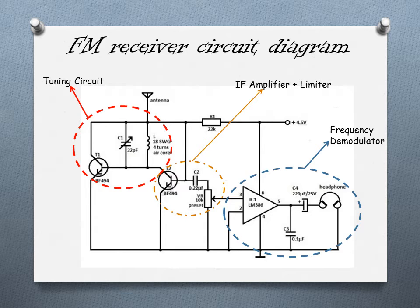The yellow circle represents the IF amplifier and the limiter. The IF amplifier amplifies the intermediate carrier frequency given as output from the mixer. The limiter acts as a clipper, used to remove the noise from the signal that occurred during transmission. The third blue circle represents the frequency demodulator, whose function is to convert the FM wave into stereo sound that can be perceived by the ear.